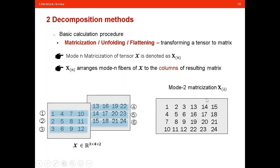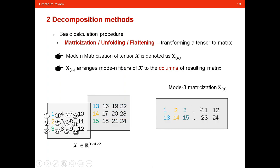We also have mode-two matrization, where we arrange the mode-two fibers as the columns of the resulting matrix — each mode-two fiber becomes a column placed in order. Similarly, mode-three matrization places the mode-three fibers as the columns of the resulting matrix, with each fiber placed along the other two dimensions in order.